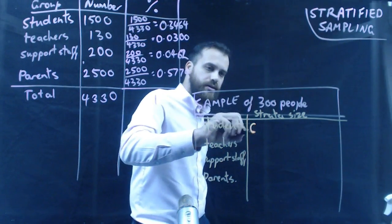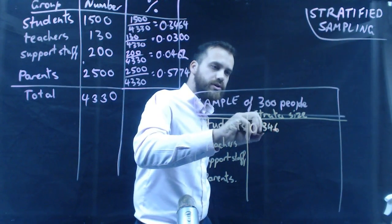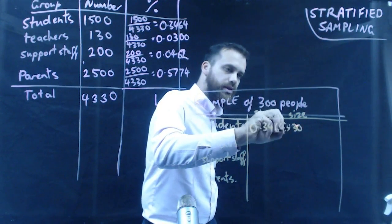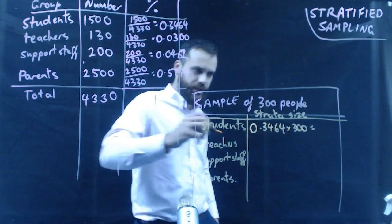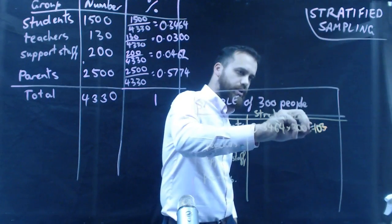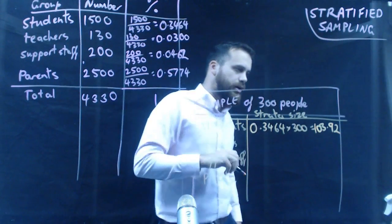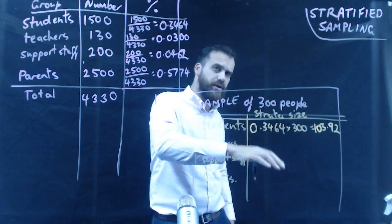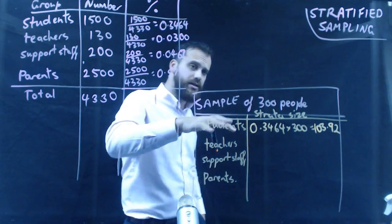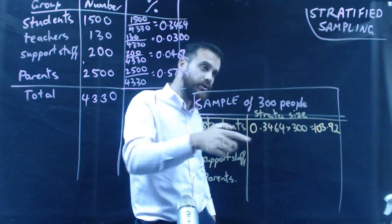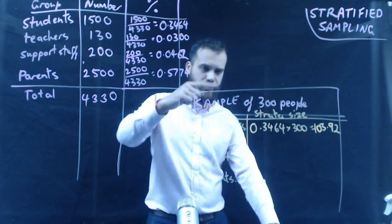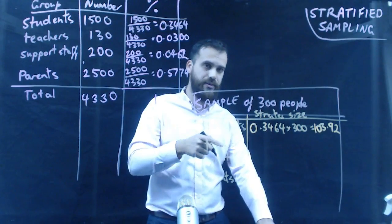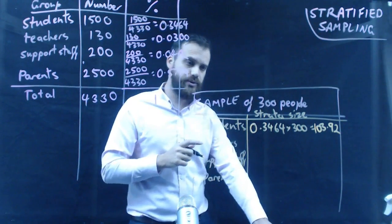So, 0.3464 times 300 equals, all right, so the answer in my calculator is 103.92. Now, I'm going to deal with those decimals in a minute, but hopefully, you realize that if you're going to get sample sizes of people, you can't have 103.92 people. I'm going to do the rest of those in exactly the same way, then we'll come back and deal with the decimals.